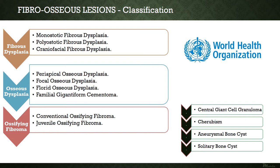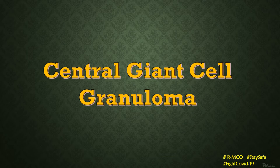We have already discussed those lesions in the previous lecture. Today we will be discussing central giant cell granuloma, cherubism, solitary bone cysts, and aneurysmal bone cysts, along with other topics. Let us begin with the first lesion: central giant cell granuloma.